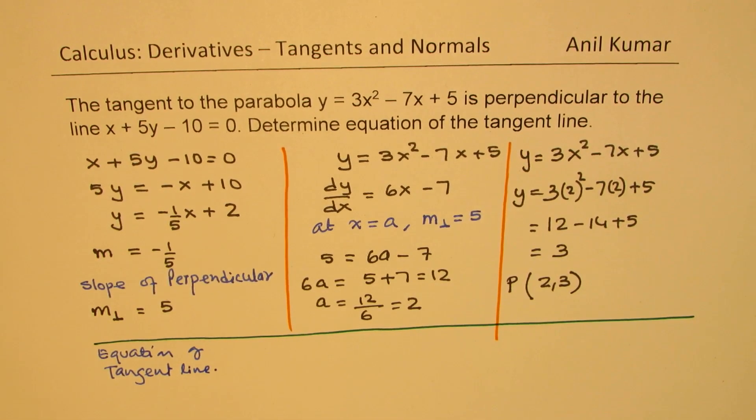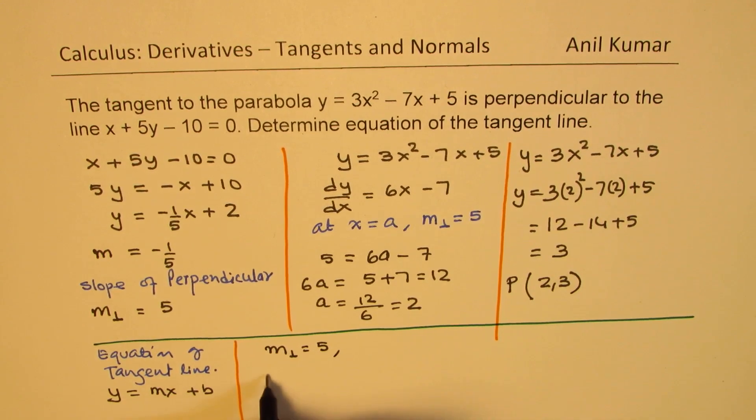You can find the equation in slope-intercept form or in standard form, as you wish. So, in this example, we'll use slope-intercept form, which is y equals mx plus b. So, in this form, we're going to write the equation. We know that the slope is given to us as 5 and the point is given to us as 2, 3.